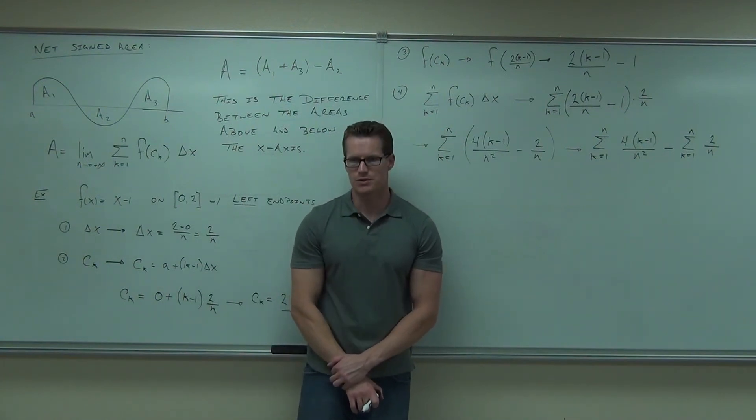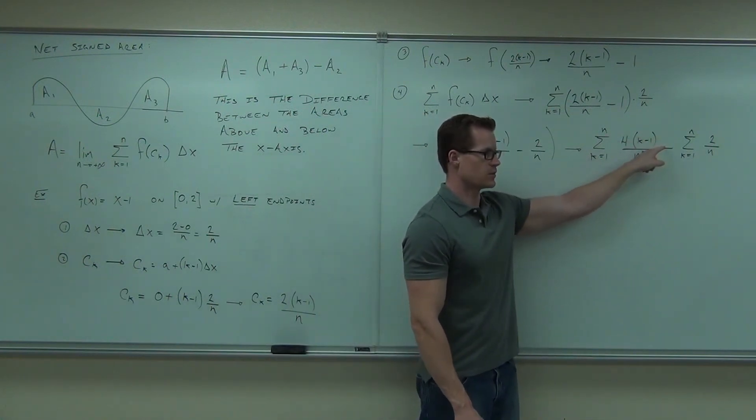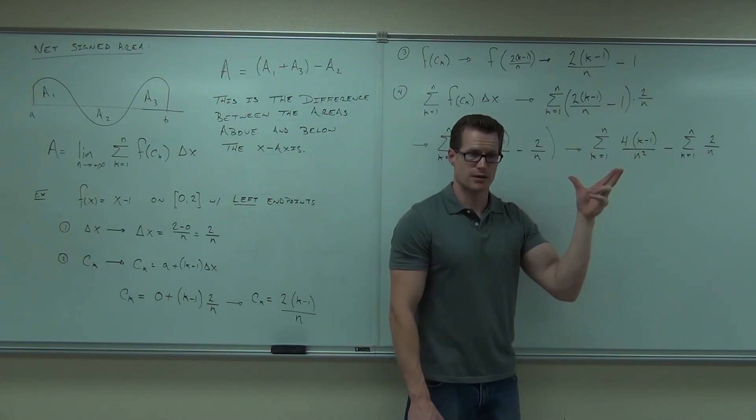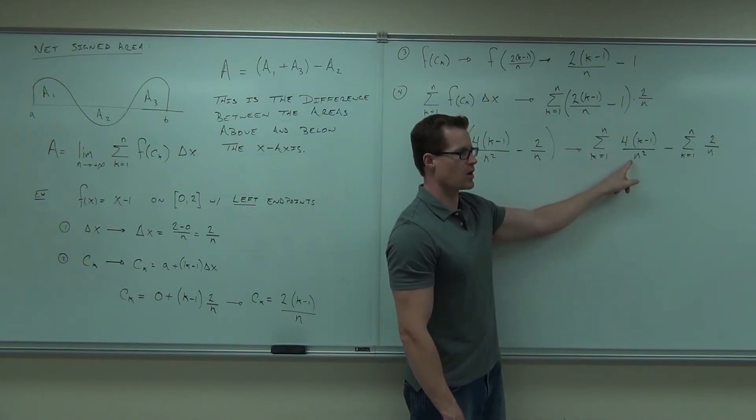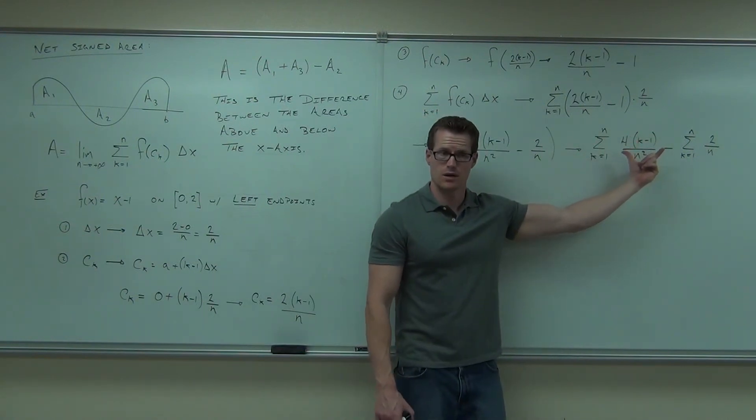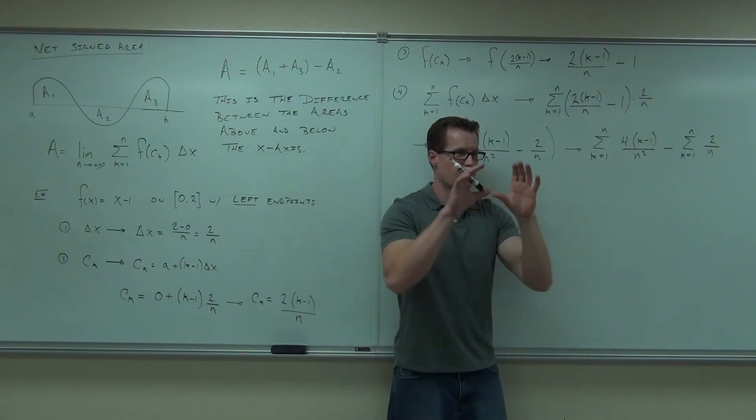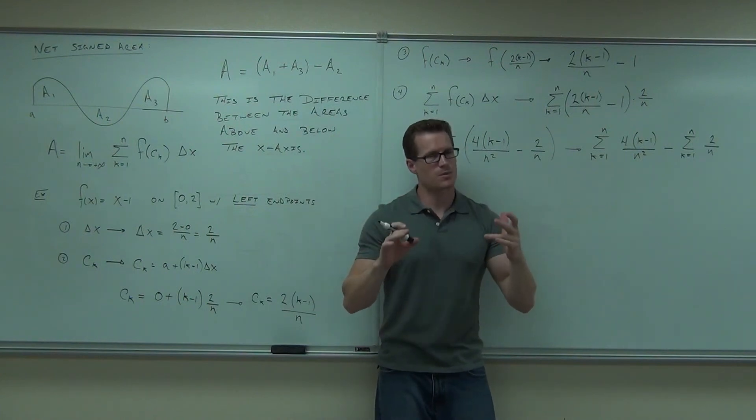At this point you do have options. Your options are this, you could distribute the 4, and then separate those fractions and make two more sums. You could do that, that's option number 1. That's a decent option. Option number 2 is, notice how this and this are not based on k. You could pull those out, and then you could separate the k minus 1, you could do that as well. Just make sure that you have a bracket around the whole thing, that way you don't miss anything about it.